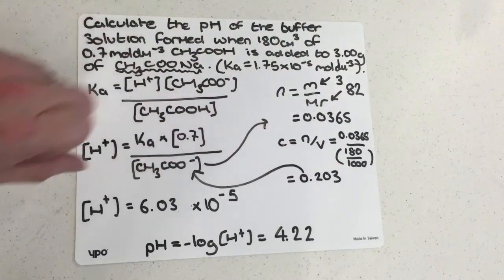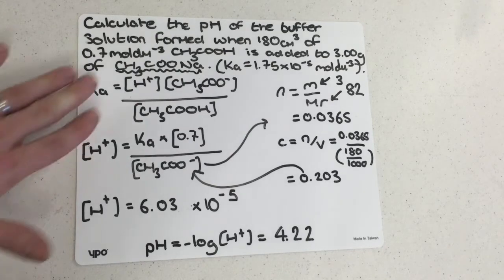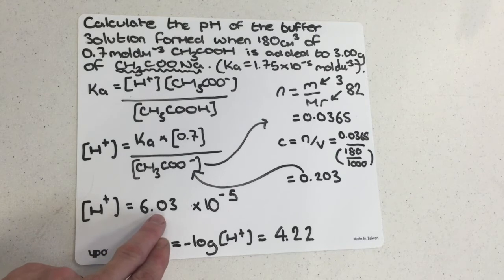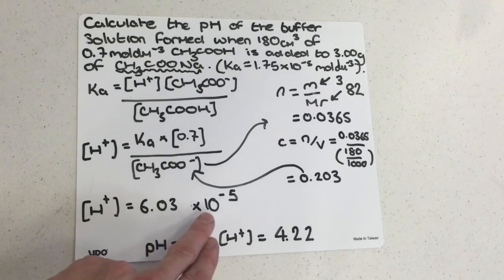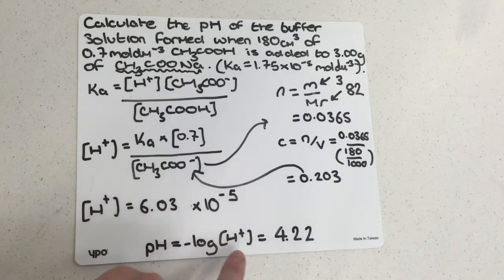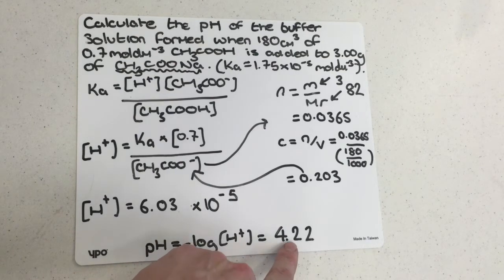This concentration can be popped straight into the calculation. Running all these numbers through gives an H+ ion concentration of 6.03 × 10⁻⁵, which can then be placed directly into the pH expression, giving a pH of 4.22.